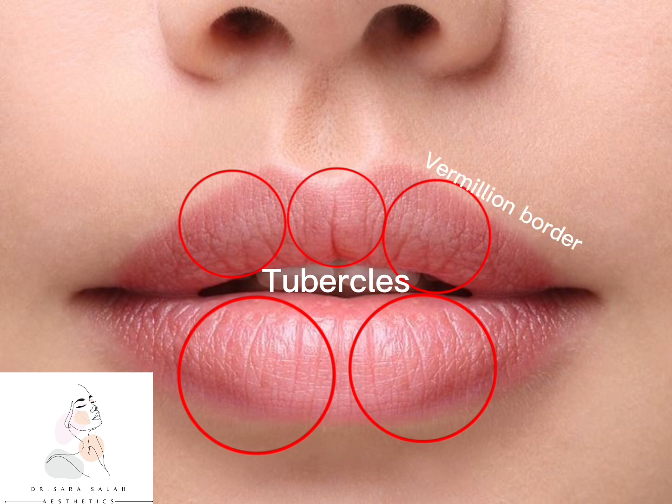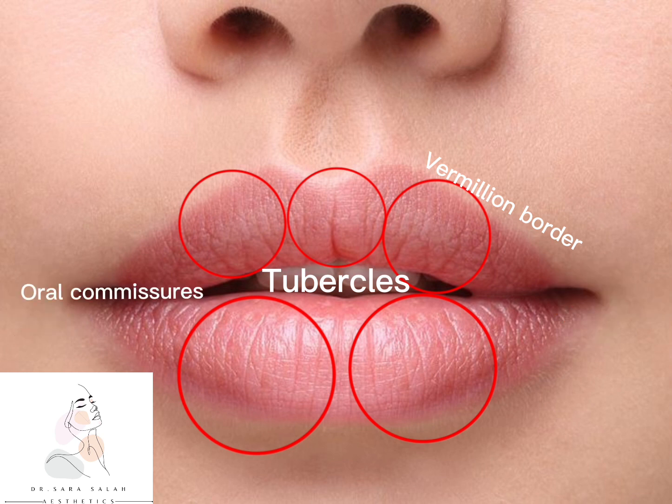The border between the red lips and the surrounding white lips is called the vermilion border. The corner of the lips is called the oral commissure. With aging and volume loss, the oral commissure can start to spread out and become wider.